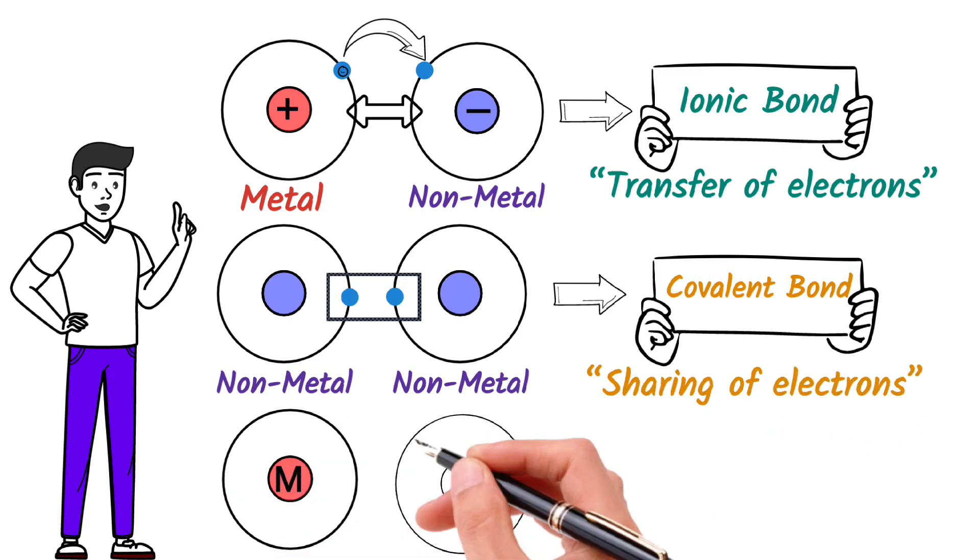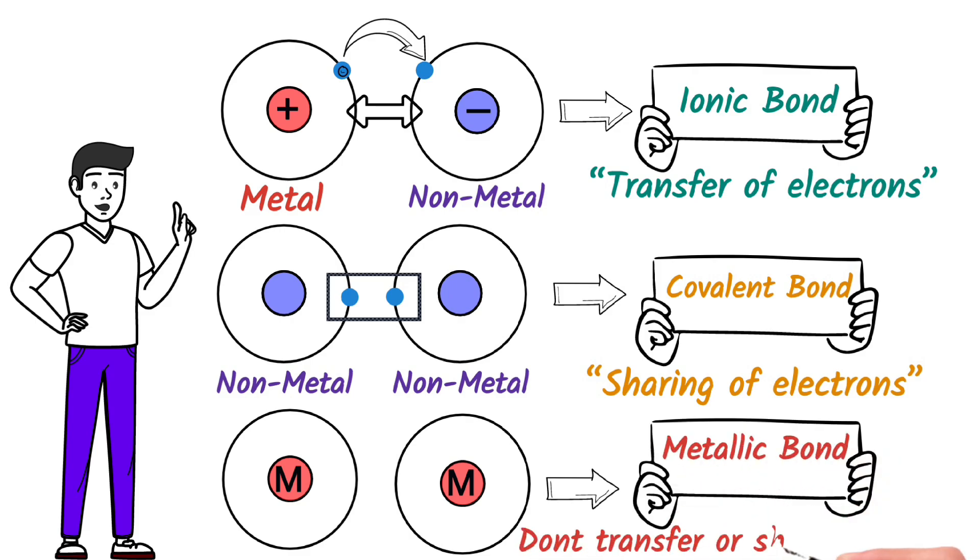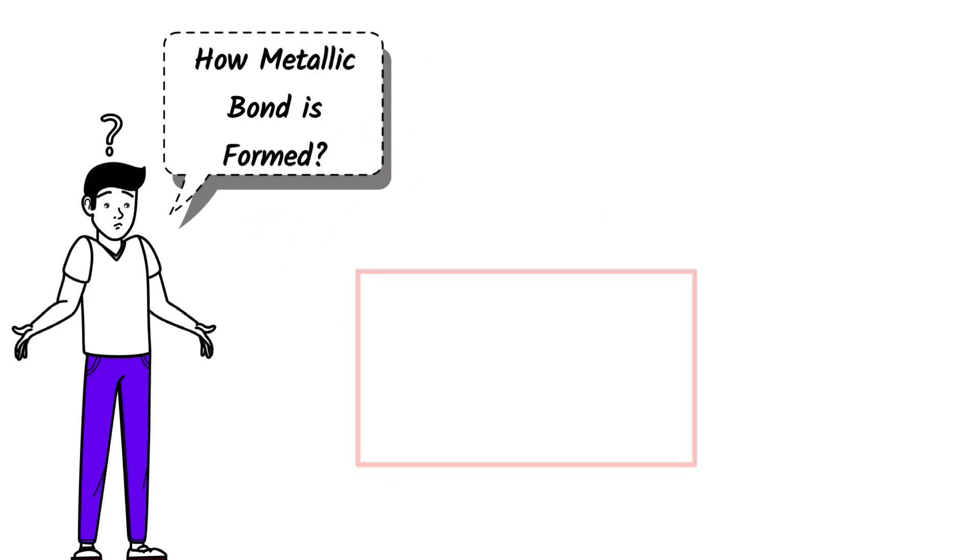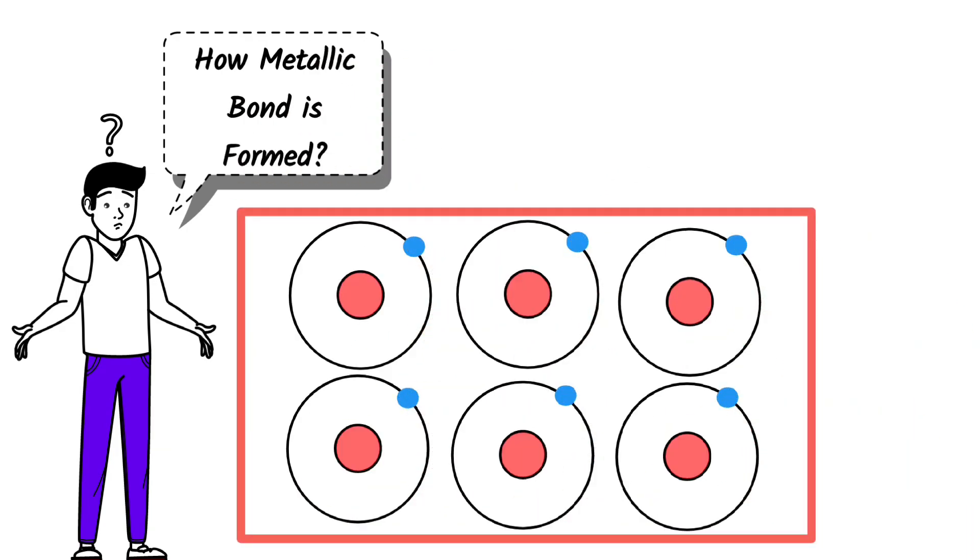When two metal atoms come together, they form a metallic bond. They don't transfer or share electrons. So how do metal atoms form a bond and become stable? Metals consist of closely packed atoms arranged in a regular pattern. When these atoms lose some of their outer electrons, they form positive ions.